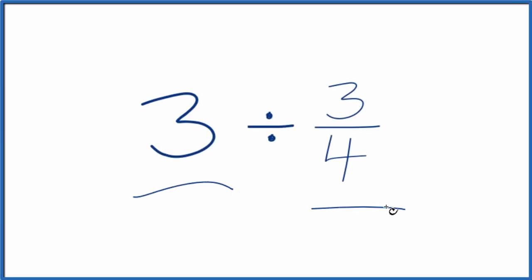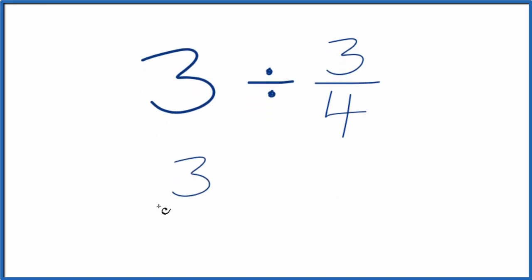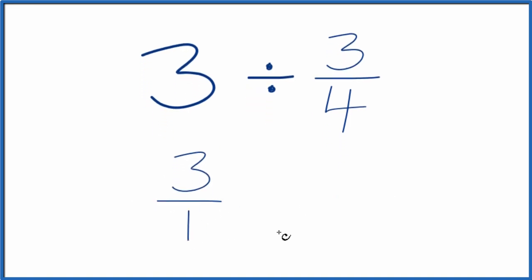Let's divide 3 by 3 fourths. Here's how we do it. We're going to start off with 3, but we're going to call it 3 over 1. It's still 3, we're just dividing by 1. Now we have the start of a fraction.